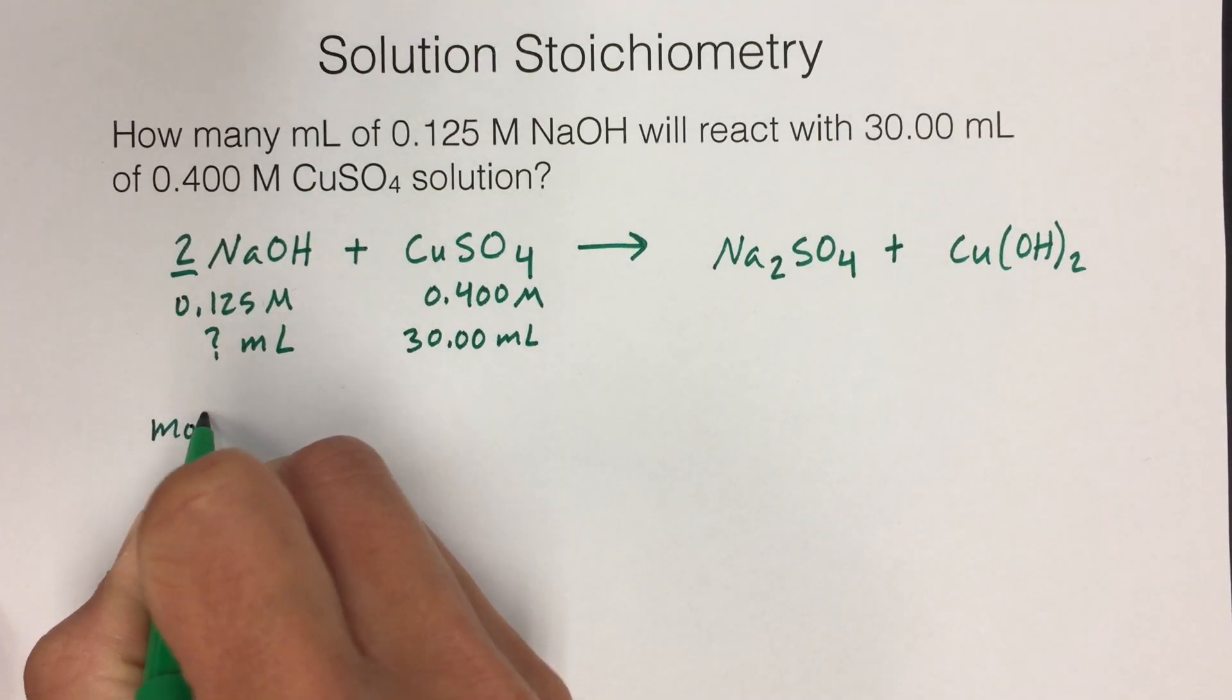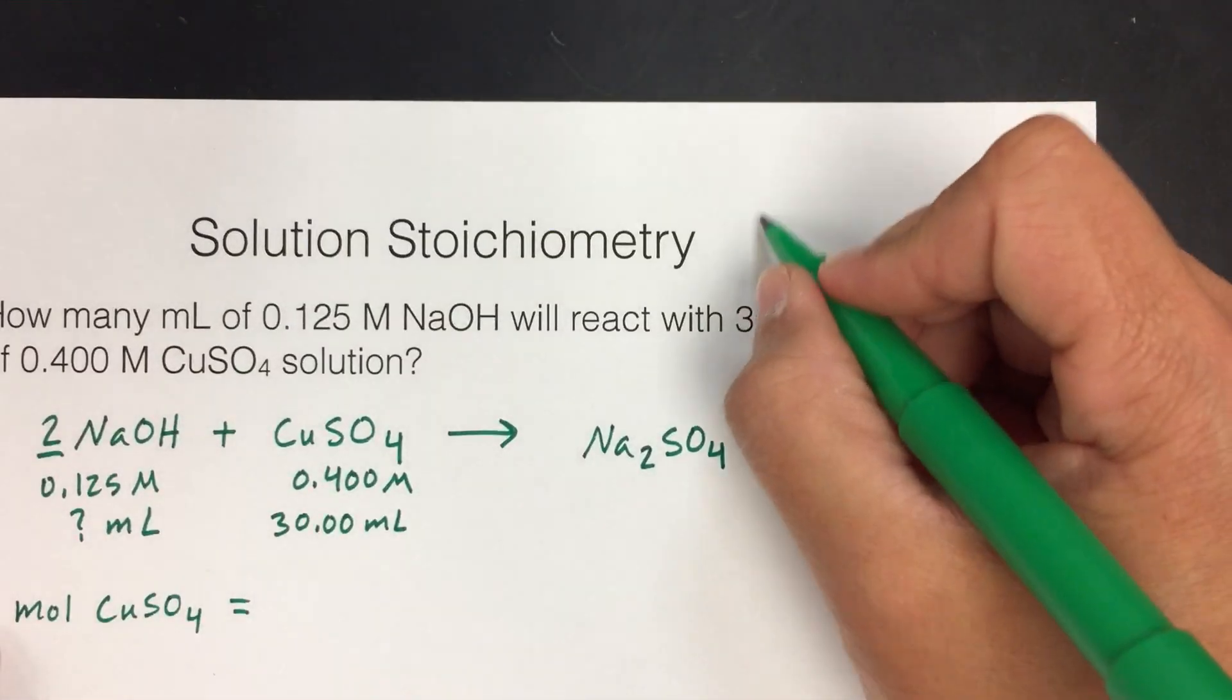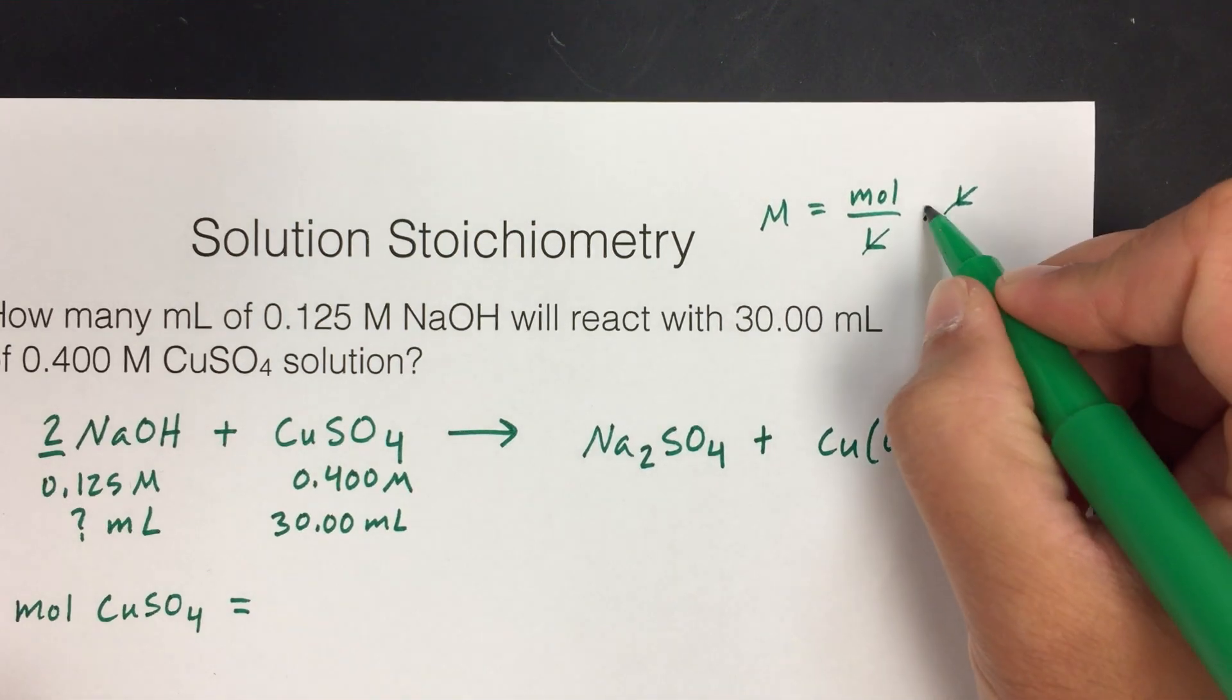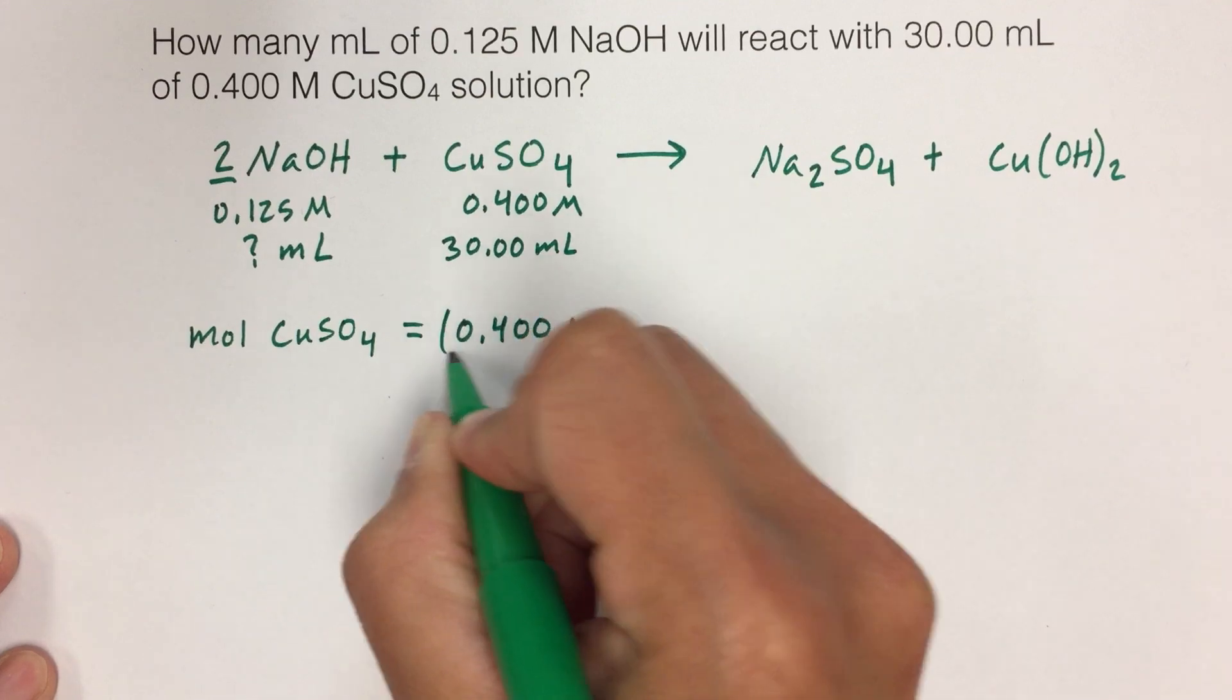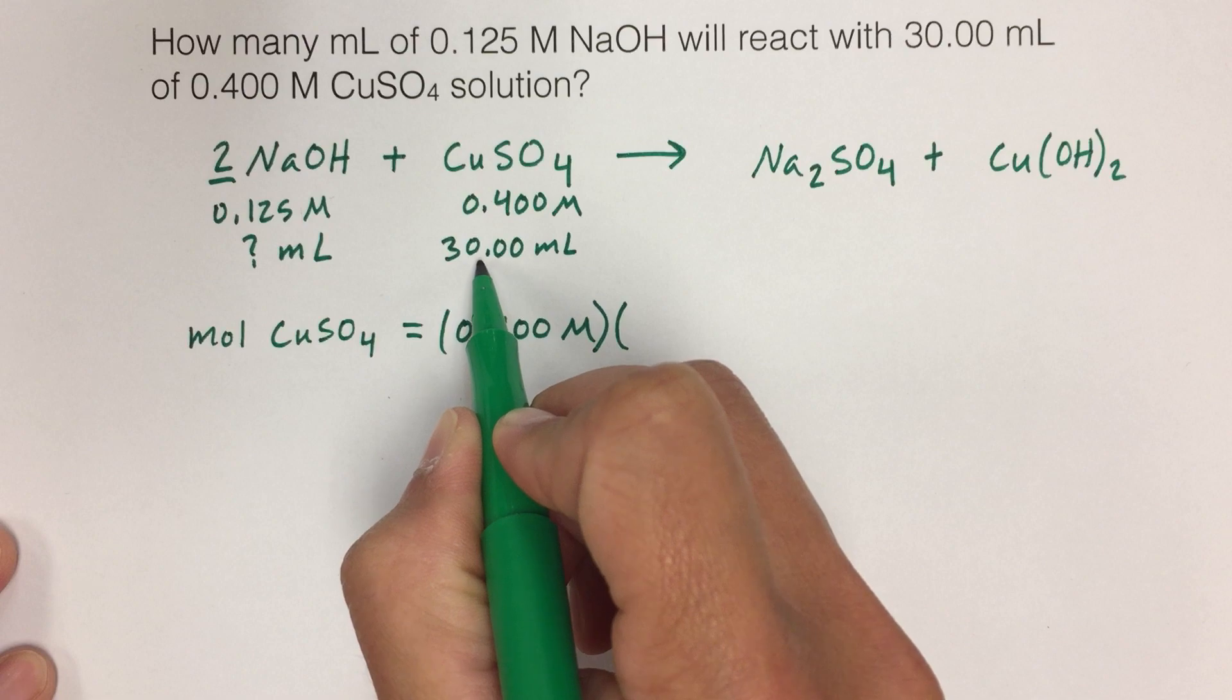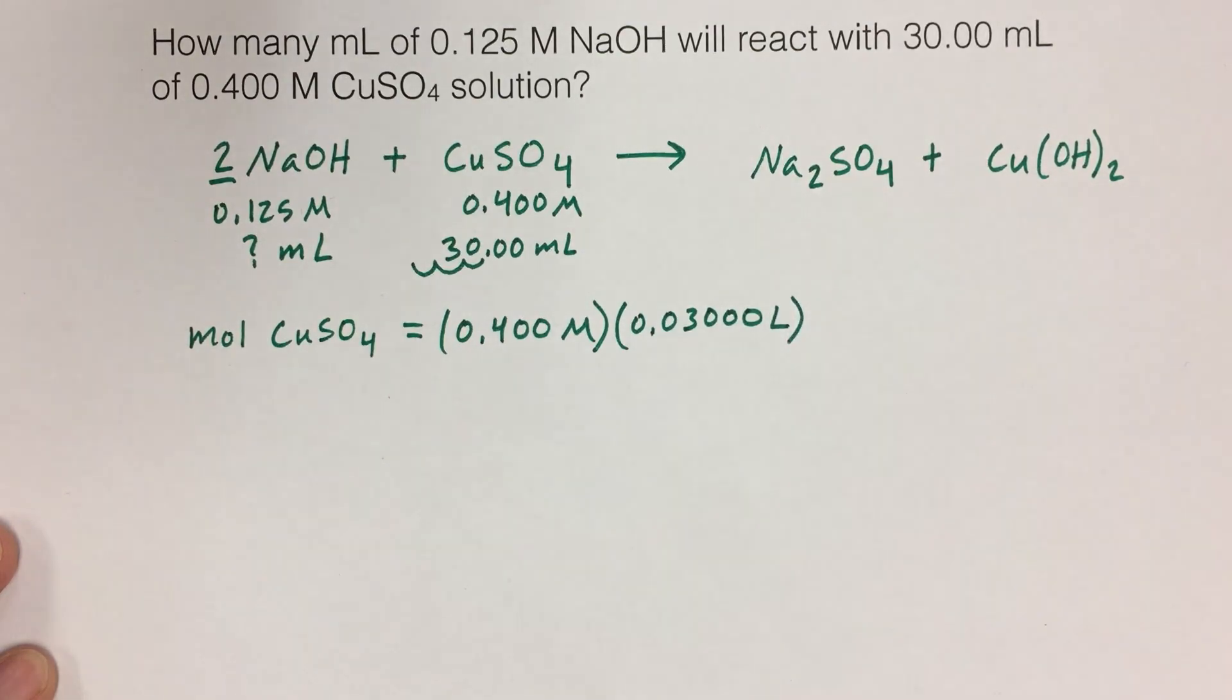So our first task is to calculate the moles of copper sulfate. And we will do that here by multiplying the concentration by the volume, right? Because within this capital M, capital M is moles per liter. Molarity is moles per liter. If we multiply that by a volume of liters, then the liters will cancel, and we will be left with moles. So we can do 0.400 molar, which is moles per liter, and we can multiply that by liters to get the moles. We don't have liters, we have milliliters, but that's okay. It's a quick conversion. If we just move the decimal place three spots to the left, we get 0.03000. Yes, I'm writing all the zeros because they are significant. And now that's liters.